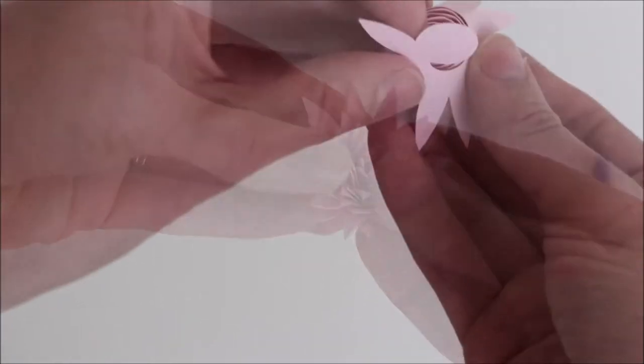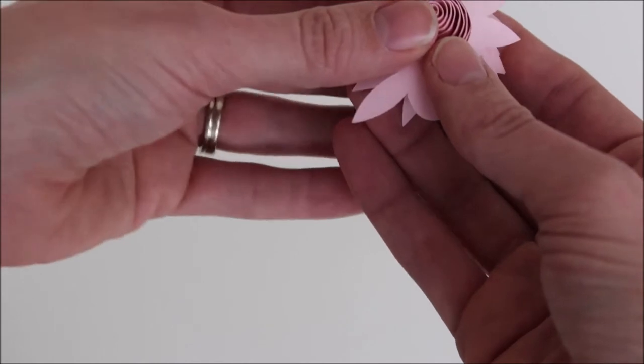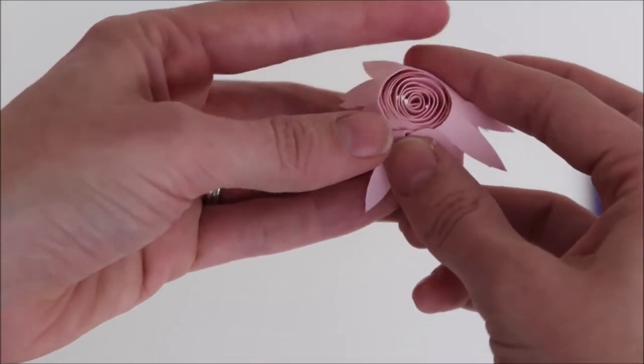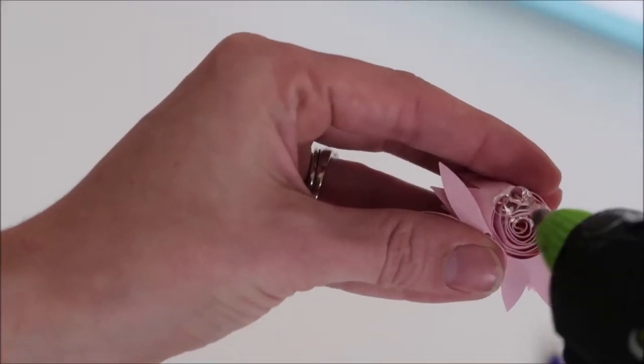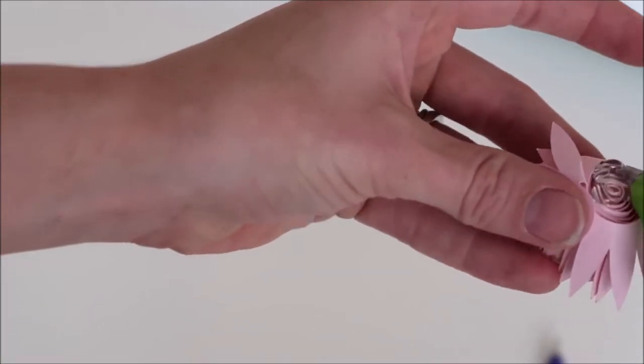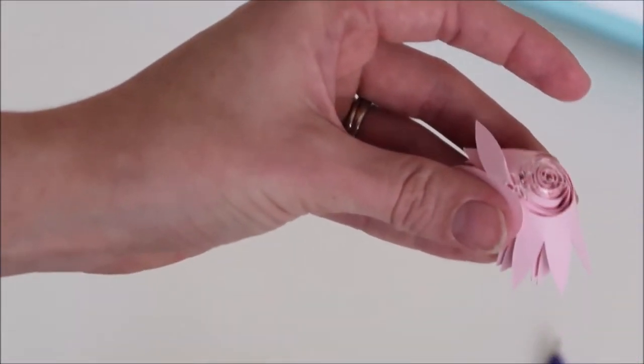Once I'm done with that I turn the flower around and there's a little circle piece at the end that you will attach to the bottom of the flower. I like to hot glue the actual bottom of the flower and then press the piece on top of that.